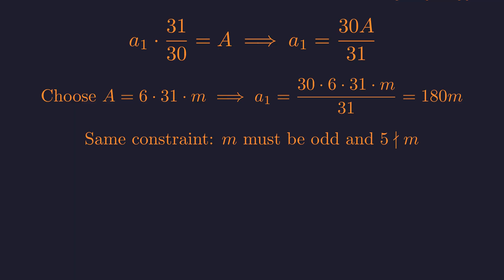Again, for A to be stable, m cannot be divisible by 2 or 5. We must also check A1, which is 180m. Since 180 is 2² times 3² times 5, and m is not divisible by 2 or 5, the smallest divisors are indeed 2, 3, and 5. This case is also consistent.